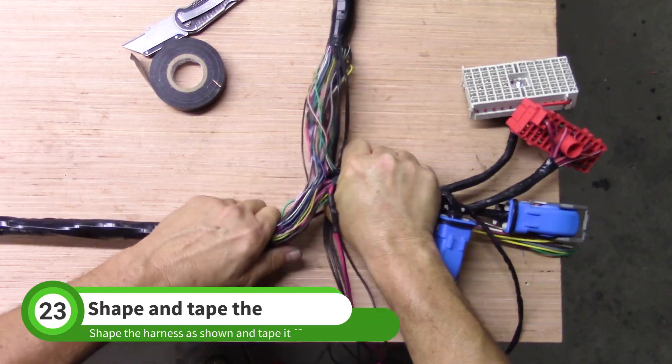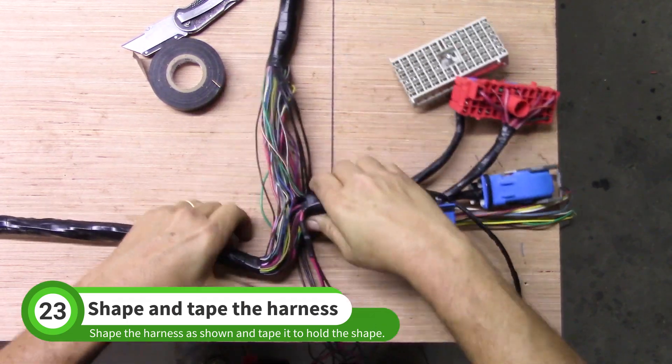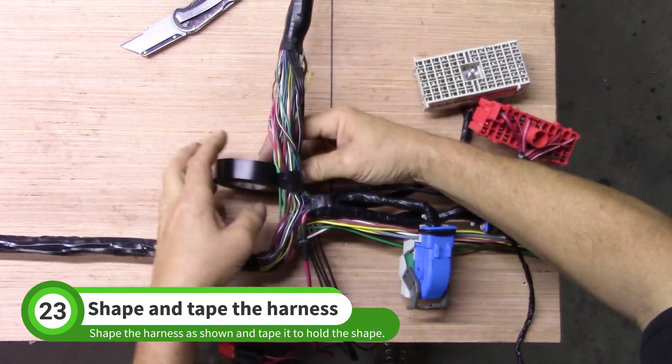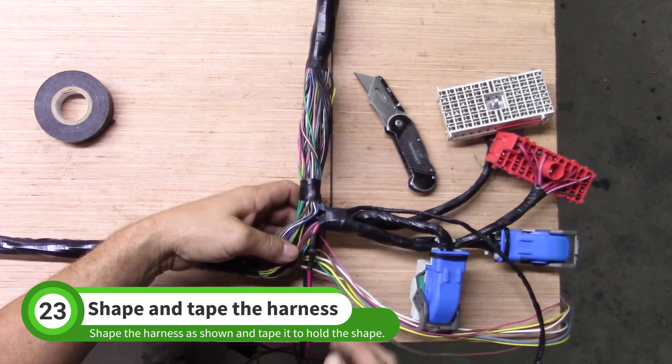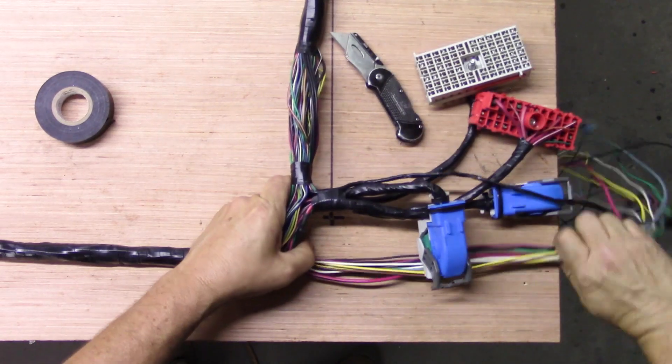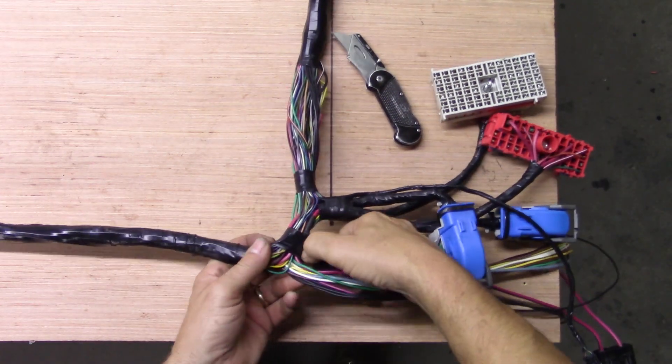Fold the harness over as shown. Try to get your harness to match the shape of our harness. Tape just above the junction to hold the wires together. Pull the loose wires together and aim them to the right. Finish taping this area as shown.